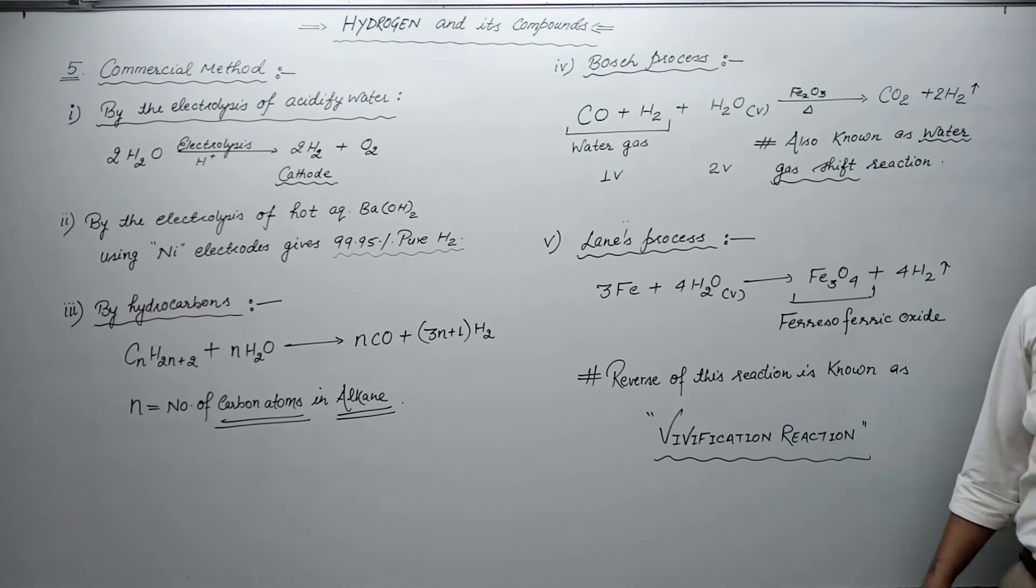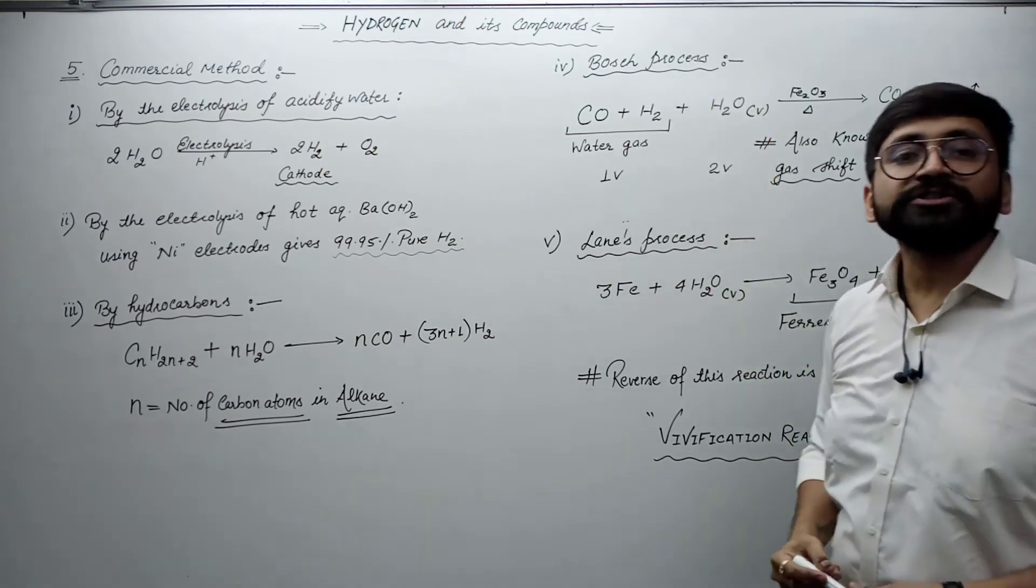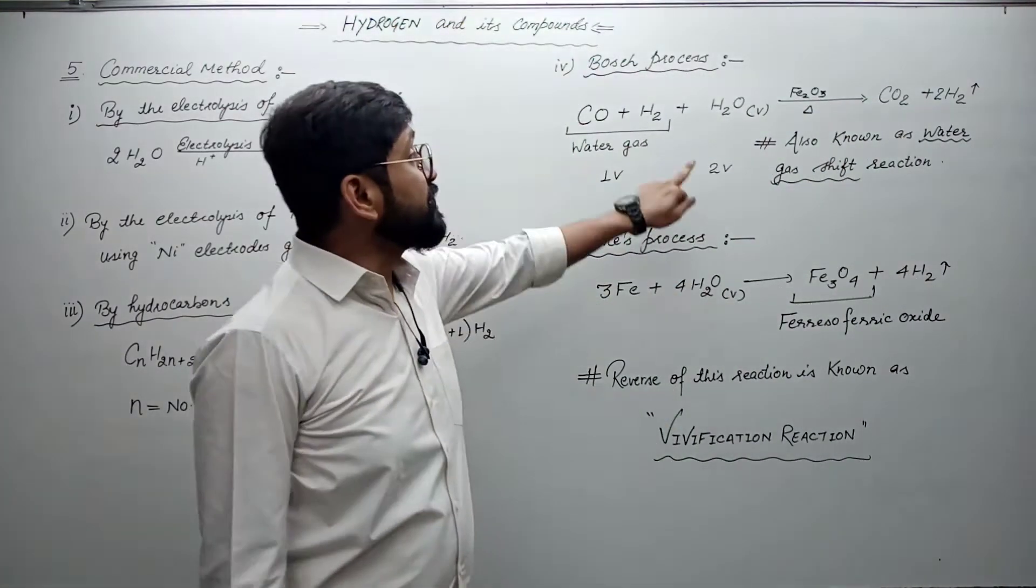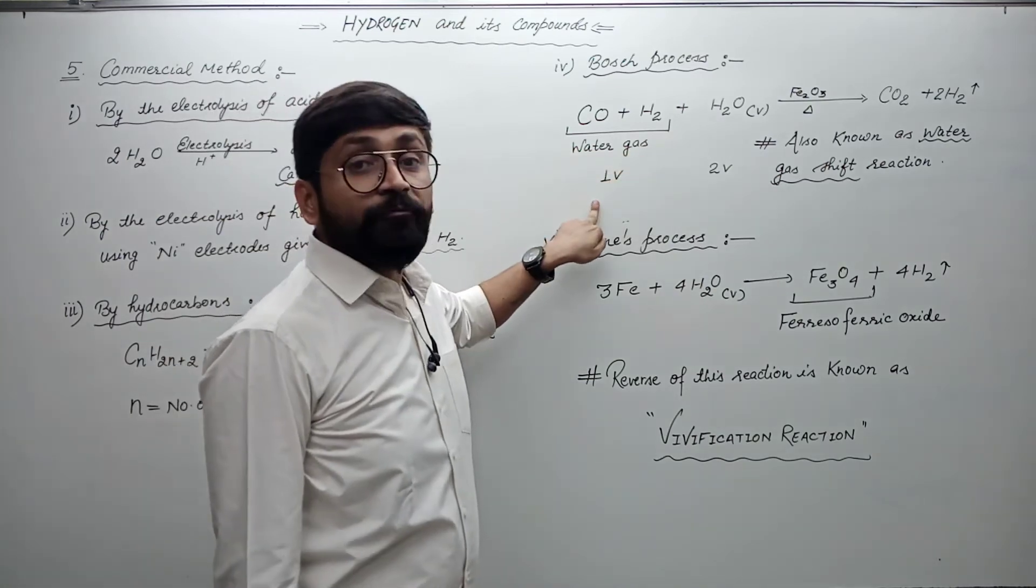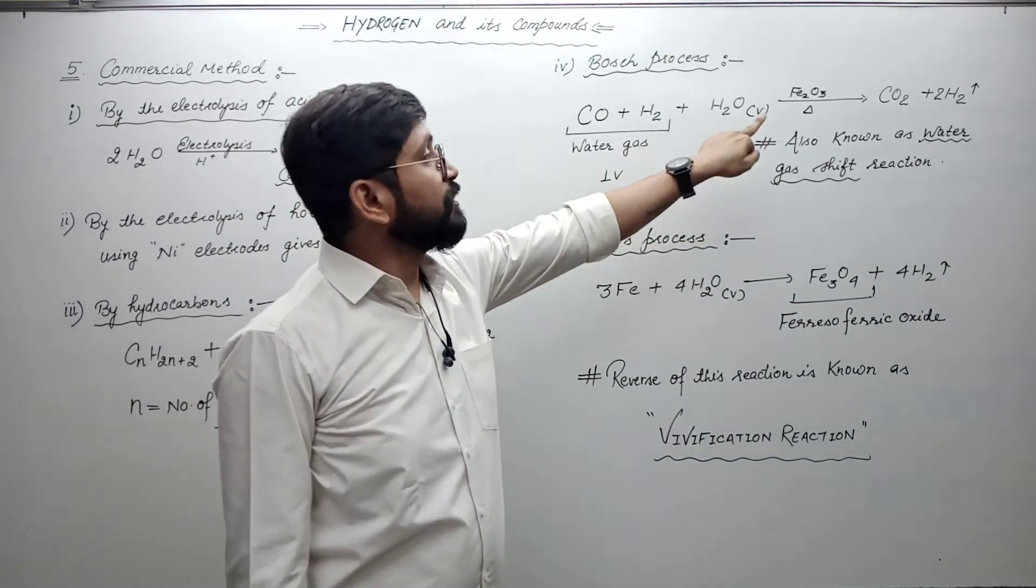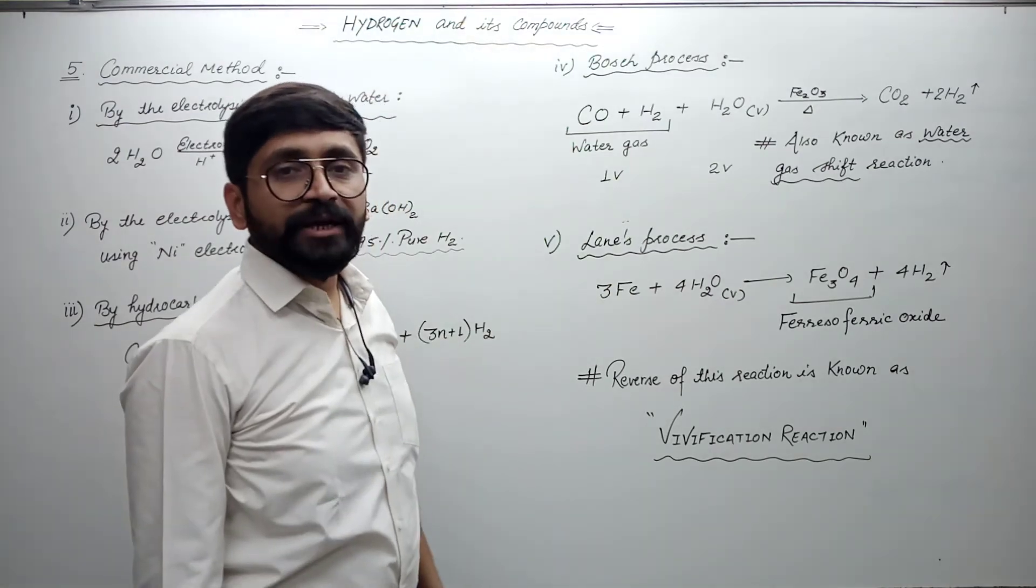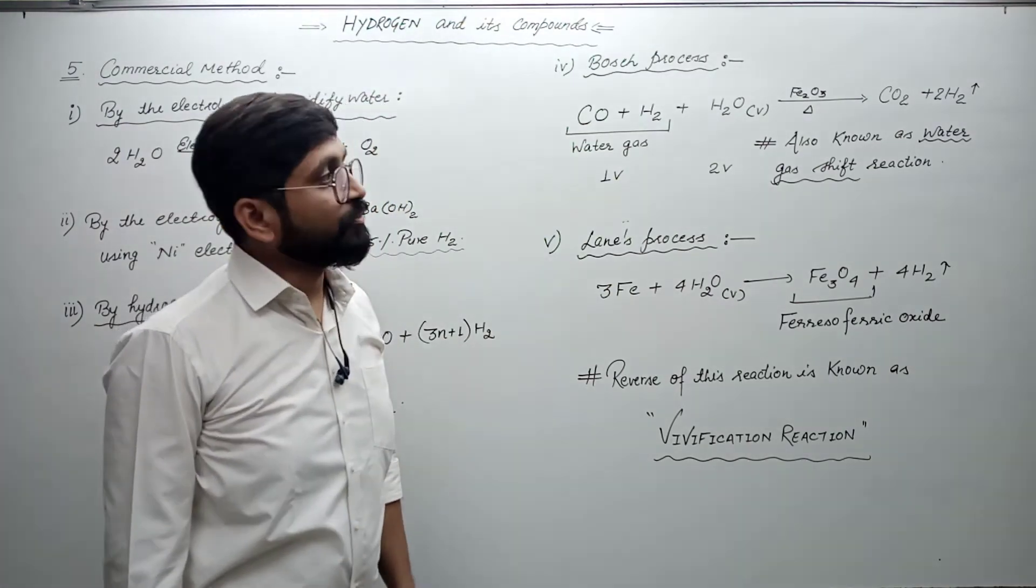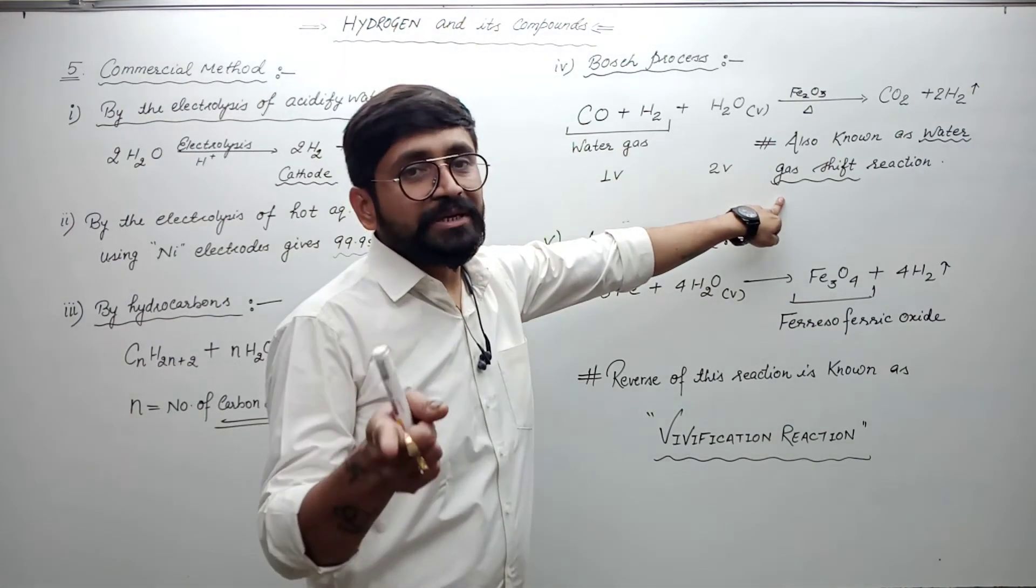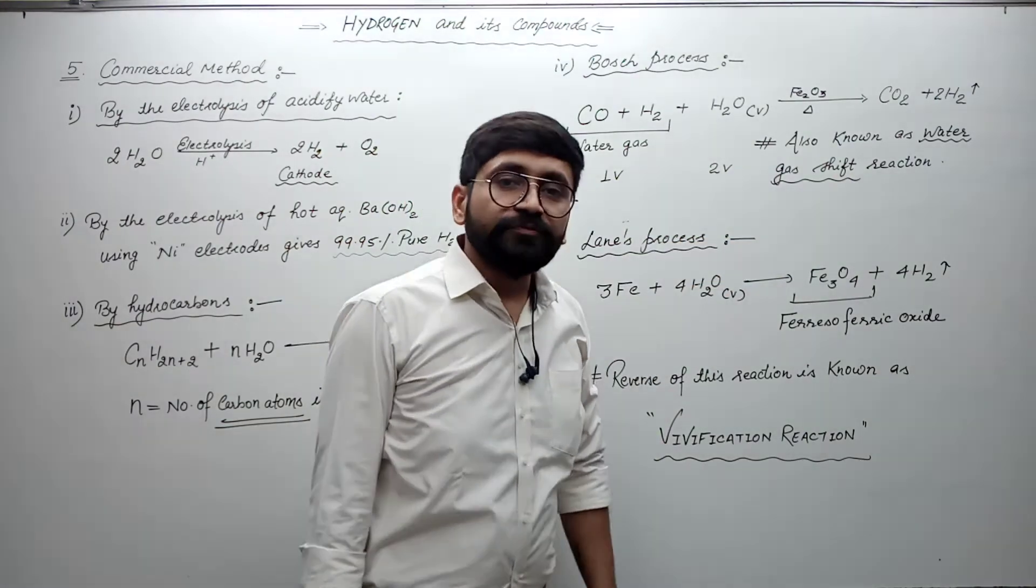The next process is called Bosch process. In Bosch process, we react water gas with steam. The ratio of the volume is the important factor, one volume to two volumes. In the presence of a catalyst, when we warm it, we get carbon dioxide gas and hydrogen gas. We get this reaction from water gas shift reaction.